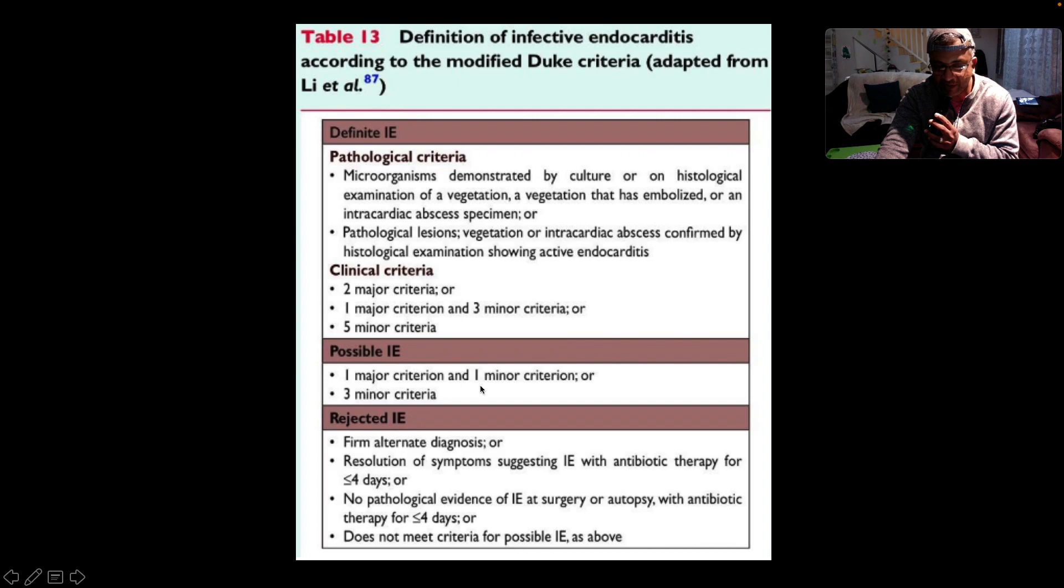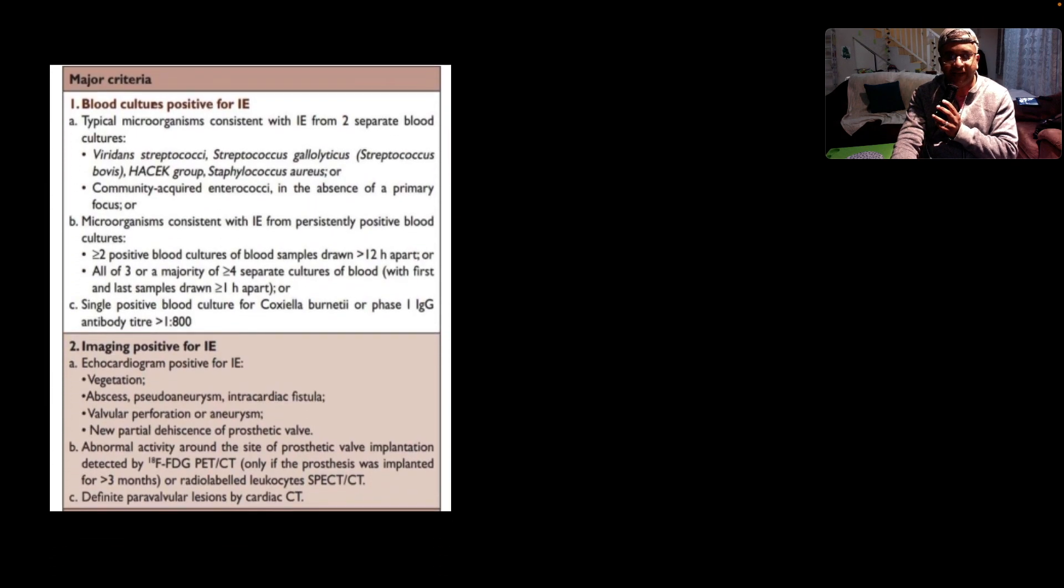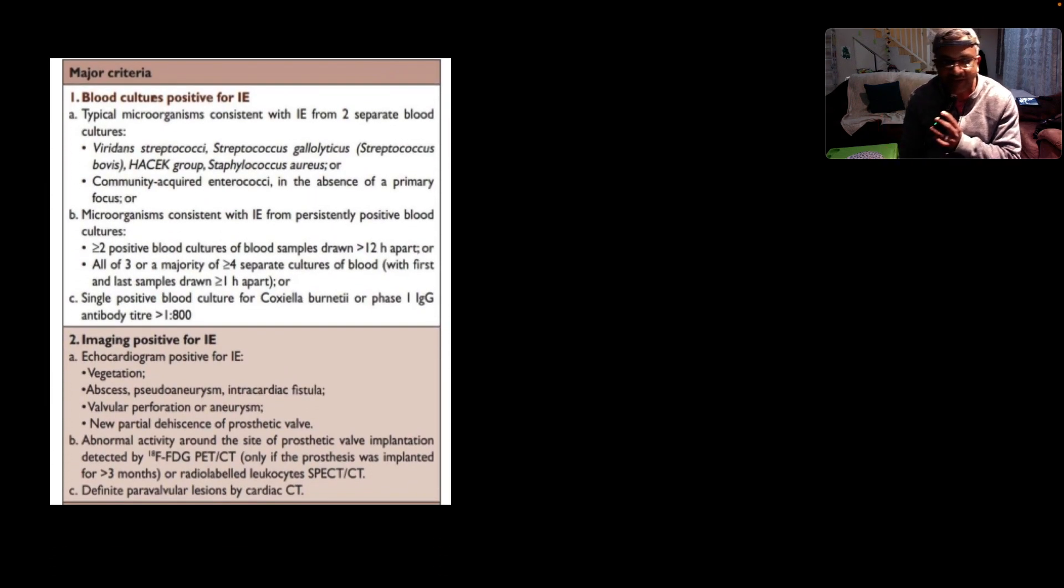Possible infective endocarditis is when you have one major and one minor or three minor. You reject the diagnosis of endocarditis if you have a firm alternative diagnosis or you have resolution of symptoms suggesting endocarditis with antibiotic therapy for under four days, or if you've got no pathological evidence of endocarditis like surgery or autopsy with antibiotic therapy for less than four days, or you do not meet the criteria for possible IE.